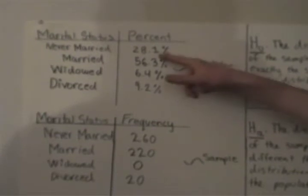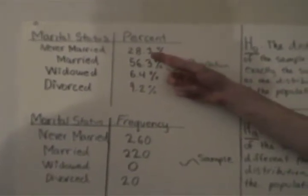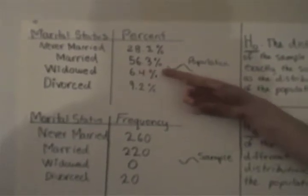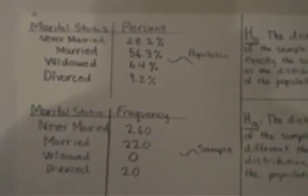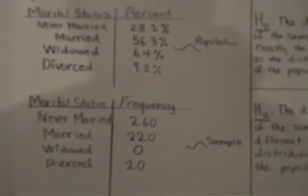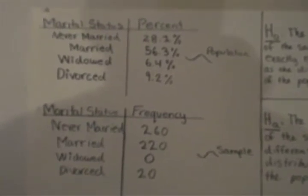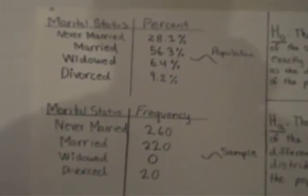So there were 28.1% of the males were never married, 56.3% were married, 6.4% were widowed, and 9.2% were divorced.